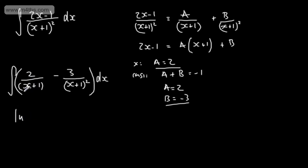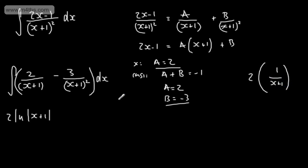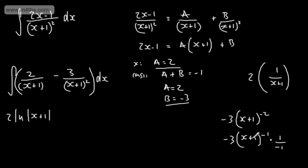The first term gives 2 times the natural log of the modulus of (x plus 1) — you can think of it as integrating 2 times 1 over (x plus 1). The second term, minus 3 over (x plus 1) squared, is minus 3 times (x plus 1) to the minus 2. Reversing the chain rule, I raise the power and divide by the new power and by the derivative of the inside function, which is just 1. That gives plus 3 over (x plus 1) plus a constant.